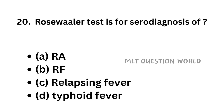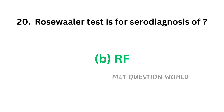Question number 20. Roseweiler test is used for the serodiagnosis of: Option A, rheumatoid arthritis; Option B, rheumatic fever; Option C, relapsing fever; Option D, typhoid fever. The correct answer is Option B, rheumatic fever. Roseweiler test is used for serodiagnosis of rheumatic fever.